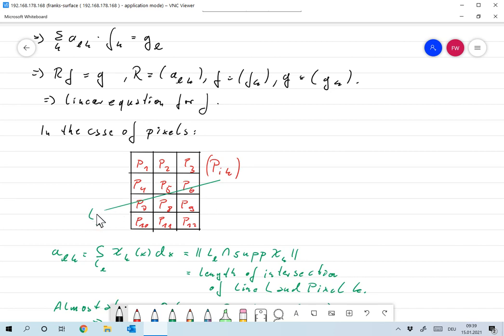Now we have a line integral over here, that's the line L_L, along which we've measured the Radon transform. So, A_LK, in this case, would be the integral over L_L of the characteristic function, let's say, of P7 over here.